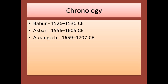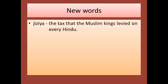In the chronology: Babur ruled the Mughal dynasty from 1526 to 1530 CE. After him, Akbar ruled from 1556 to 1605 CE. Aurangzeb's rule was from 1659 to 1707 CE. A new word to note is 'Jizya' — the tax that Muslim kings levied on every Hindu.